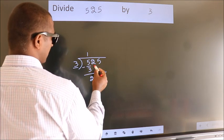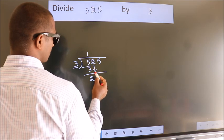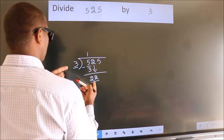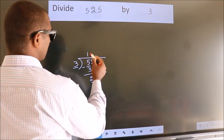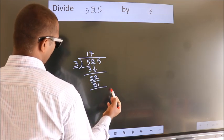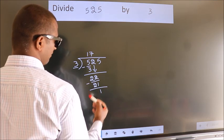After this, bring down the beside number. So 2 down. So 22. A number close to 22 in 3 table is 3 sevens 21. Now we subtract. We get 1.